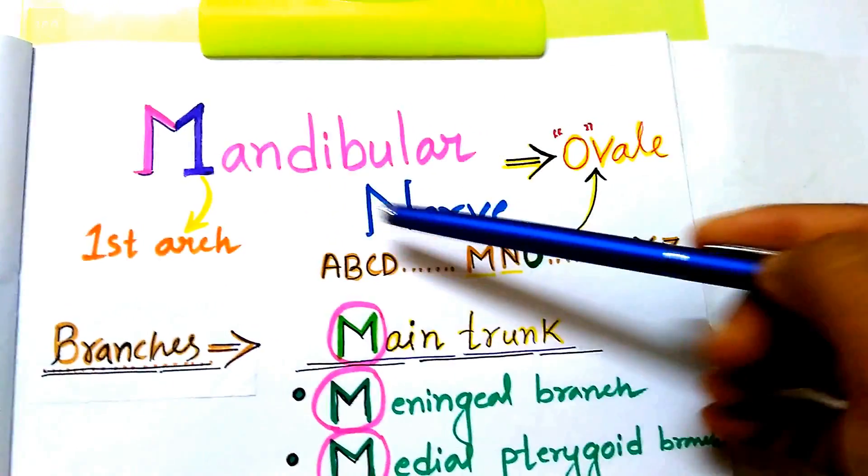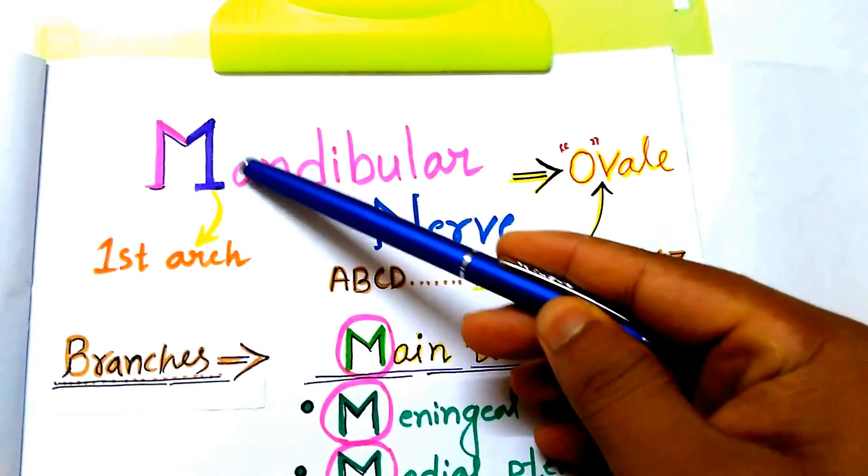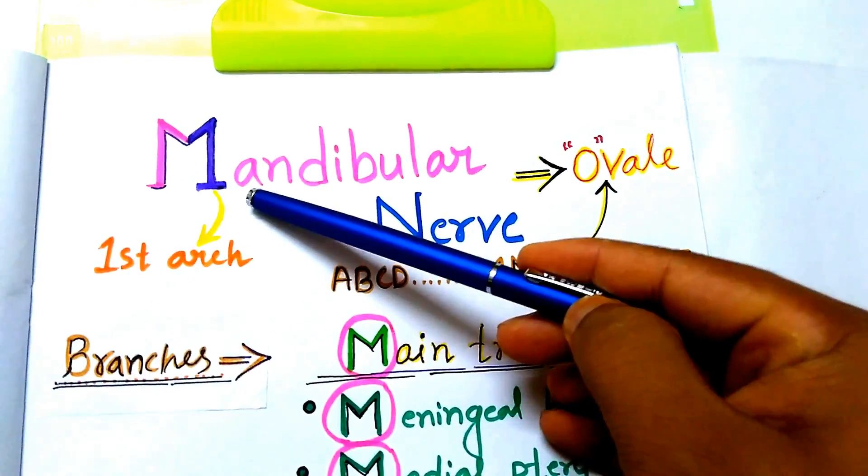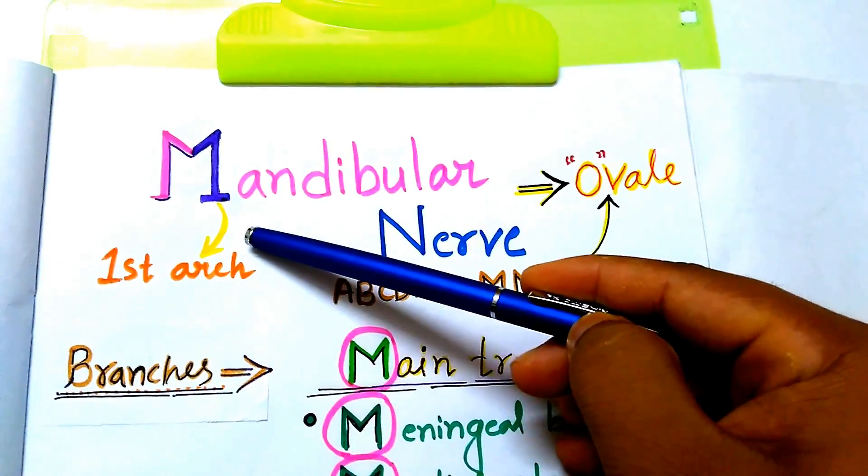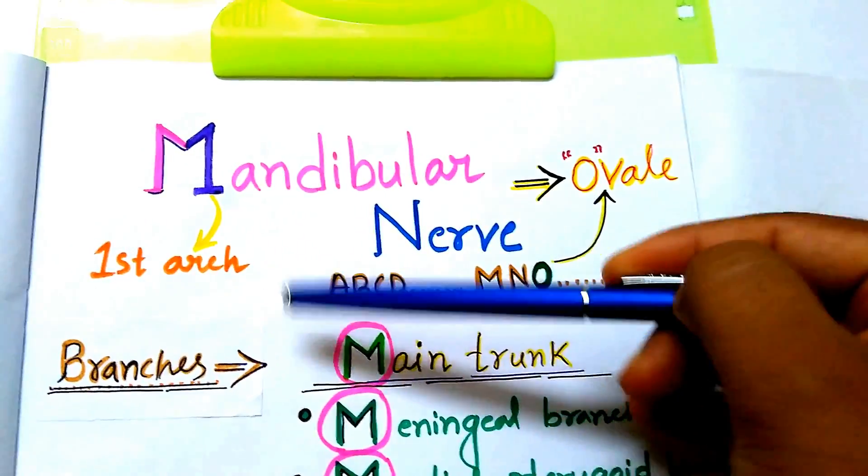As we can see, mandibular nerve. In the M we can see the number 1. It is a nerve of the first arch. It supplies the structures which develop from the first arch.